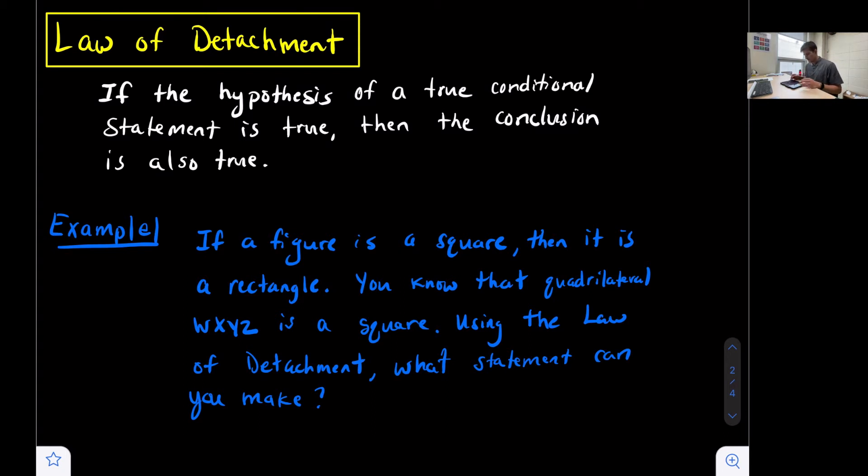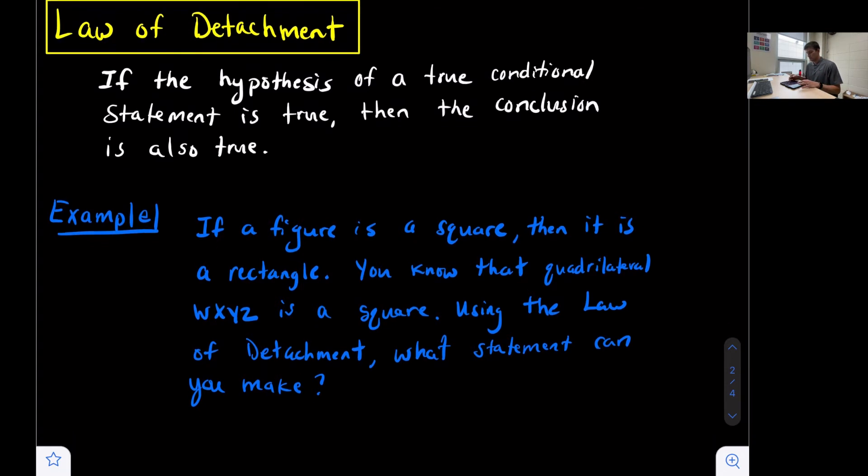So look at our example. If a figure is a square, then it is a rectangle. You know that quadrilateral WXYZ is a square. Using the law of detachment, what statement can you make?